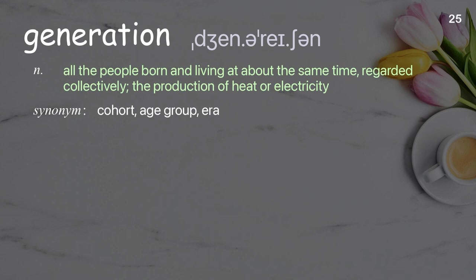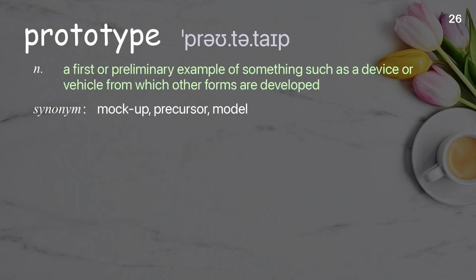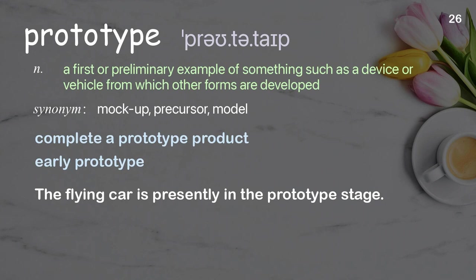Generation: all the people born and living at about the same time, regarded collectively; the production of heat or electricity. Examples: generation gap, the generation of electricity. The younger generation has different values and beliefs than the older one. Prototype: a first or preliminary example of something, such as a device or vehicle, from which other forms are developed. Examples: complete a prototype product, early prototype. The flying car is presently in the prototype stage.